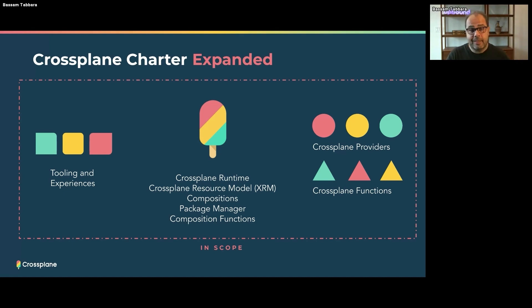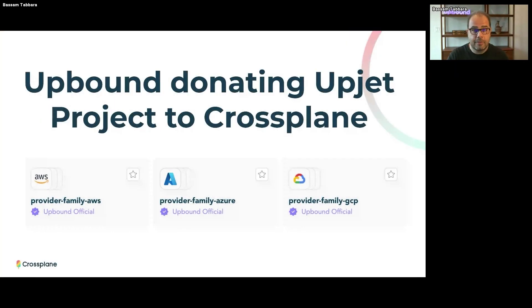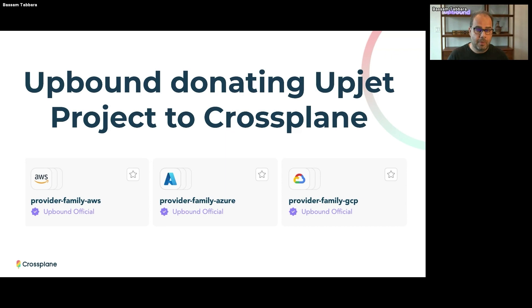With the charter change, I have a second announcement. Upbound, the company I'm CEO of, is donating its Upjet project to the Crossplane community. Upjet is a set of code generation tooling that we at Upbound created and use to run our official providers for AWS, Azure, and GCP — including the family providers that break provider-AWS into smaller, service-scoped providers — along with all the performance work that has happened. These providers are solid and running in production. As part of the charter expansion, this enables the Crossplane community to take these providers under one roof, ensure they work correctly together, and start converging them.